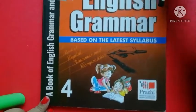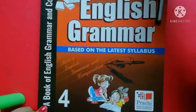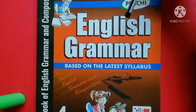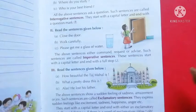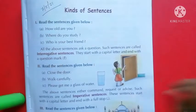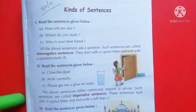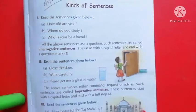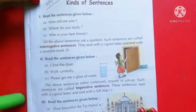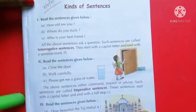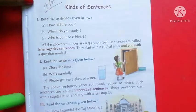Hello students, good morning. This class is for Class 4 English grammar. Today in our grammar class we will do kinds of sentences. On page number 9, in this section we will know about the types of sentences.